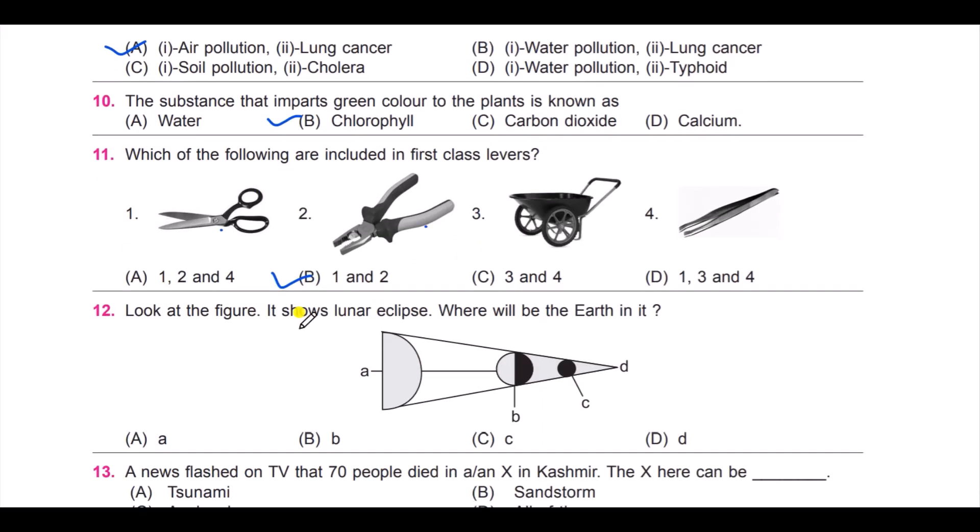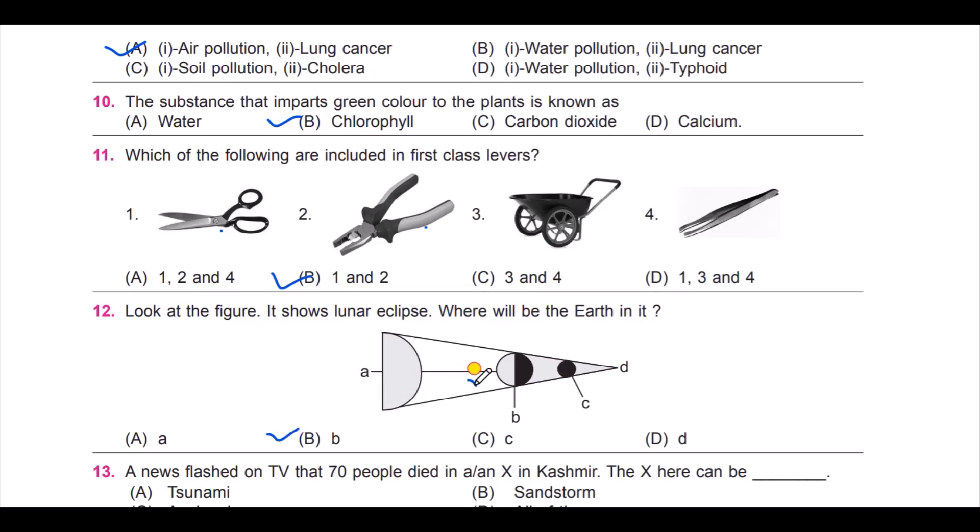Next, look at the figure. It shows lunar eclipse. Where will be the Earth in it: A, B, C, or D? It is B. This is your Earth.